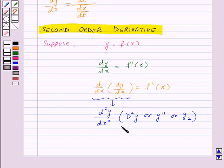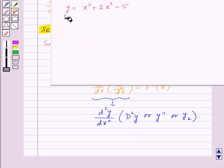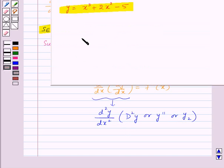So let us take one example to understand this. Here we are given y equals x cube plus 2x square minus 5, and we need to find second order derivative of y, that is y double dash.